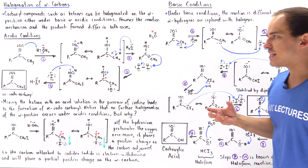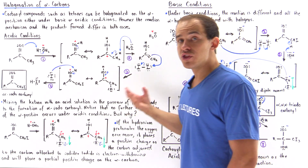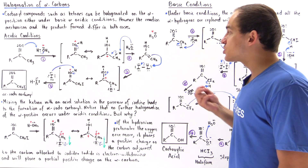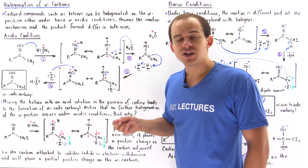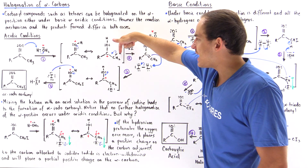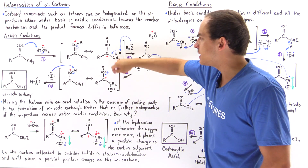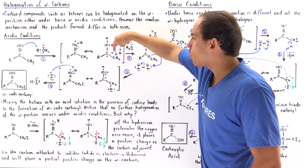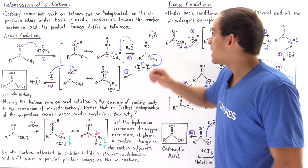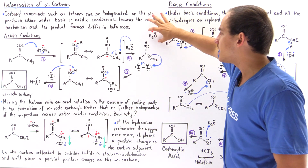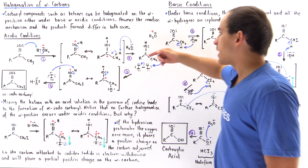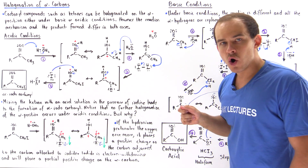In step two, the water molecule produced acts as the Lewis base and takes away the H atom found on the alpha carbon. When we remove one of these H's on the alpha carbon, a pi bond forms between the two carbons, and we form our hydronium ion as well as our enol. So we regenerate the acid and we form our enol.